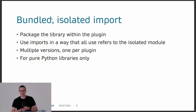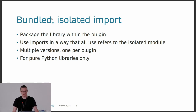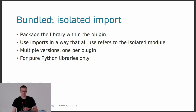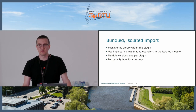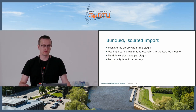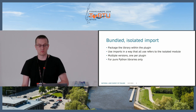Another way is an isolated import. In this case you also package the library within the plugin, but you use the imports in a way that the code refers to the isolated module instead of a global top-level module. In this way you can use multiple versions, one per plugin, but it works for pure Python libraries only — because in binary dependencies the module runtime path has to match the compiled one.